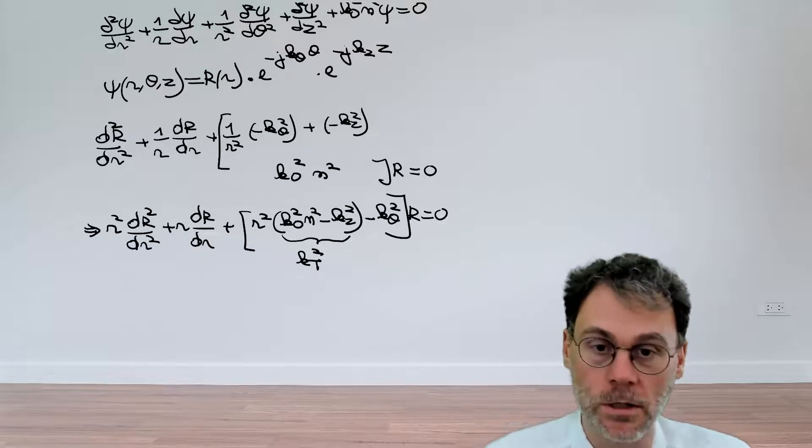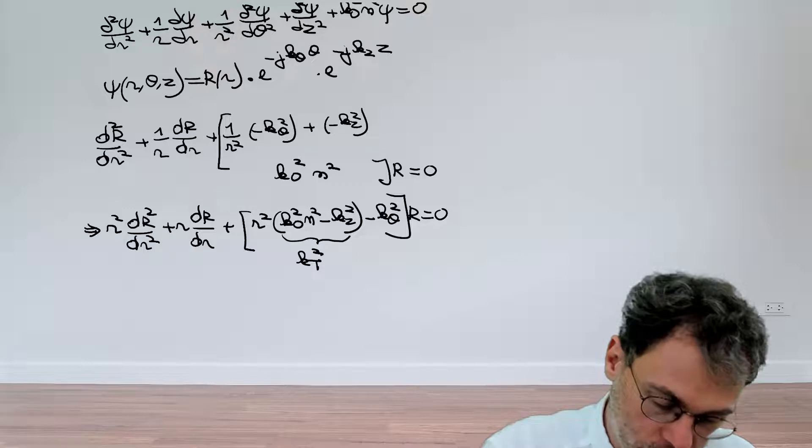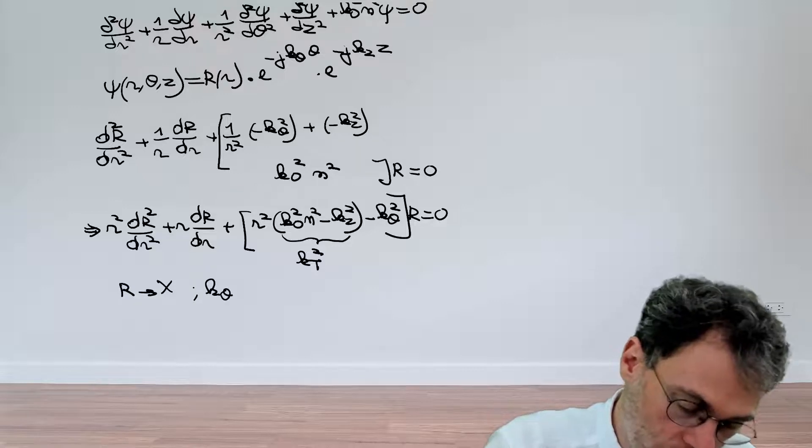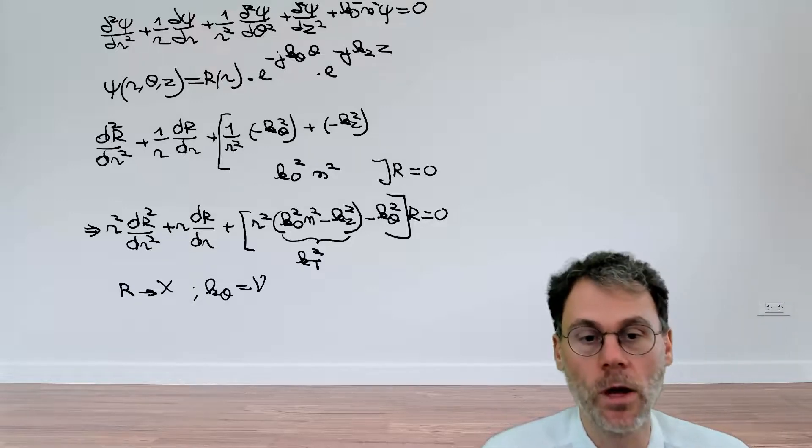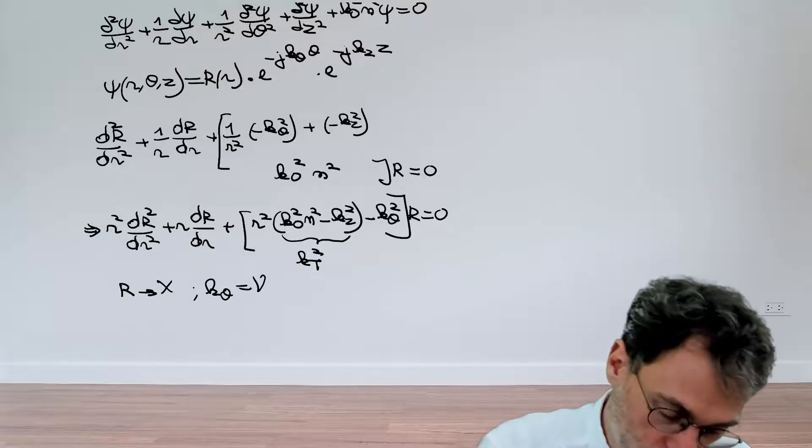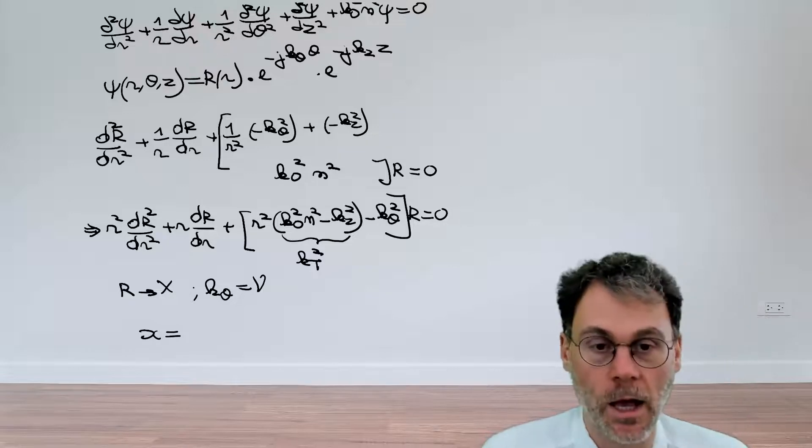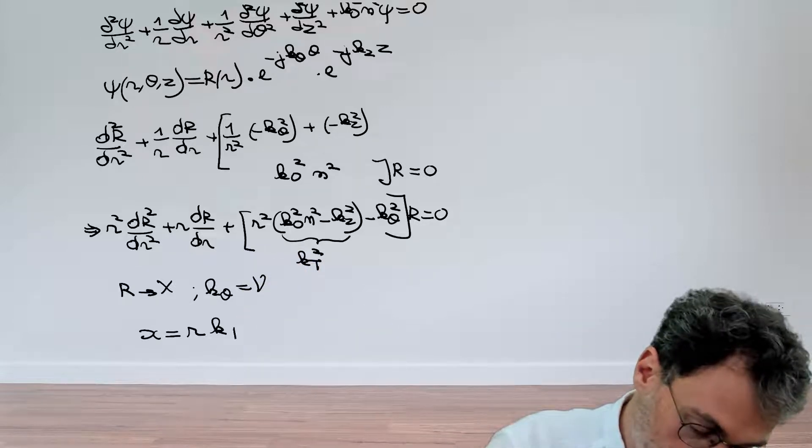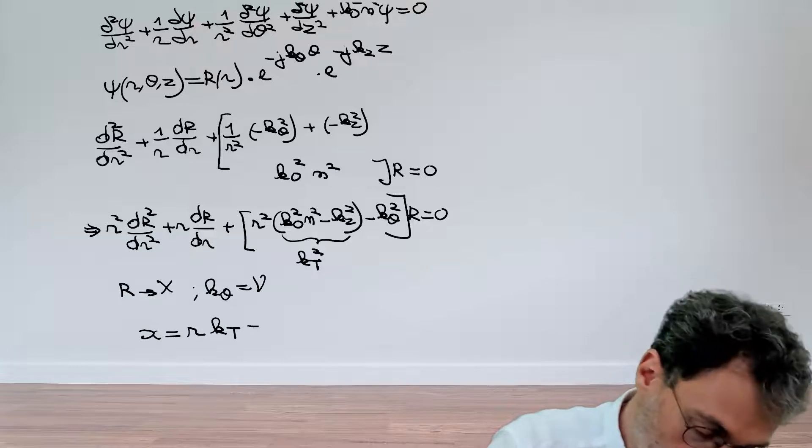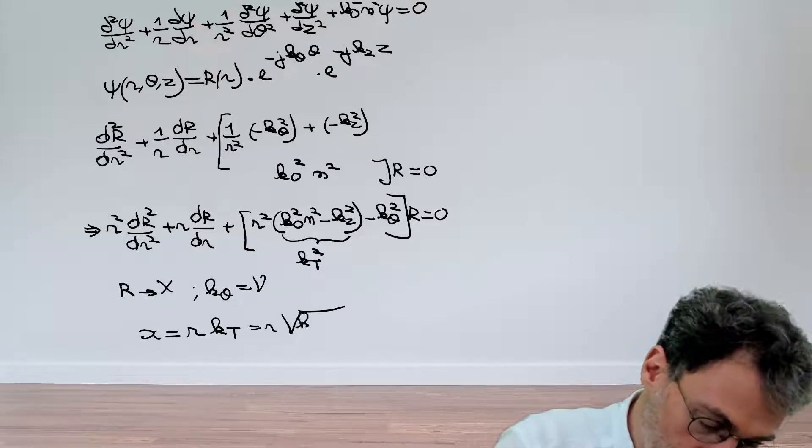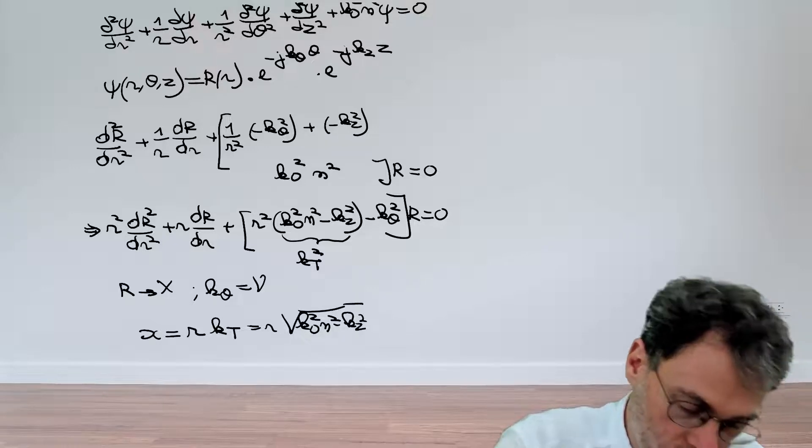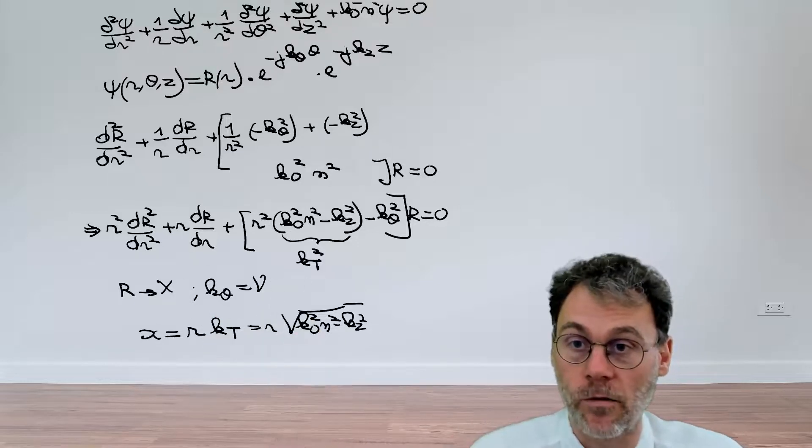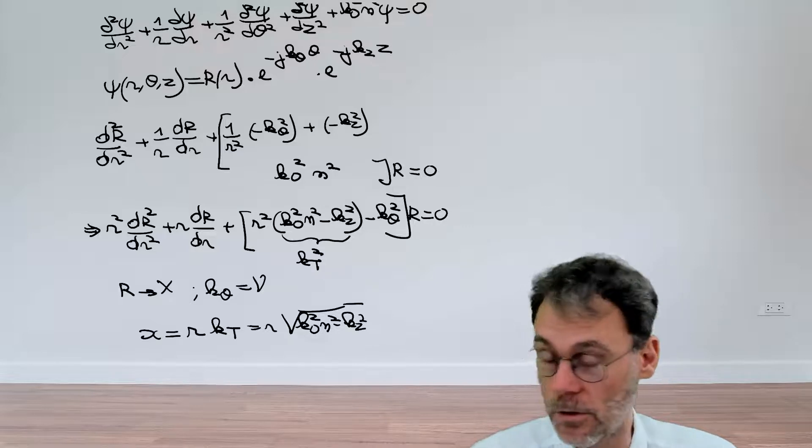Let's perhaps also give the constants a bit more of a neutral name that does not really remind us of the fact that we're dealing with eigenmodes in cylindrical waveguides. So let's rather than calling it r, call it x. Rather than call this thing kθ, let's call this just a more neutral ν. And let's also introduce a new variable x, which is actually r times kt. So r times kt. So r times the square root of k₀²n² minus kz². This way it will be a bit more neutral looking. Pause the video, make these changes, and then finally you will end up with the long sought after Bessel differential equation.